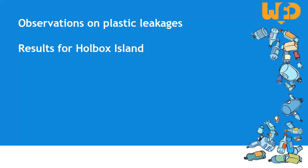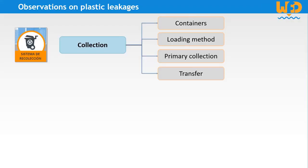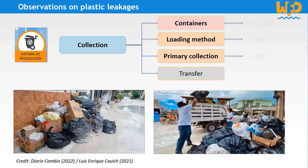Now that we have seen the general principle, let's look together at the main observations for the case study of Isla Holbox. For the collection stage, we have a very high leakage potential for containers due to the lack of appropriate containers. Waste is stored by generators in bags and boxes and exposed to animals such as birds and raccoons, with long waiting times for collection services, particularly outside the central area of the island. The leakage potential is considered high for the loading method, as it is common for bags to break during this process. The leakage potential is also high for primary transport, as the collection vehicles are not completely enclosed.